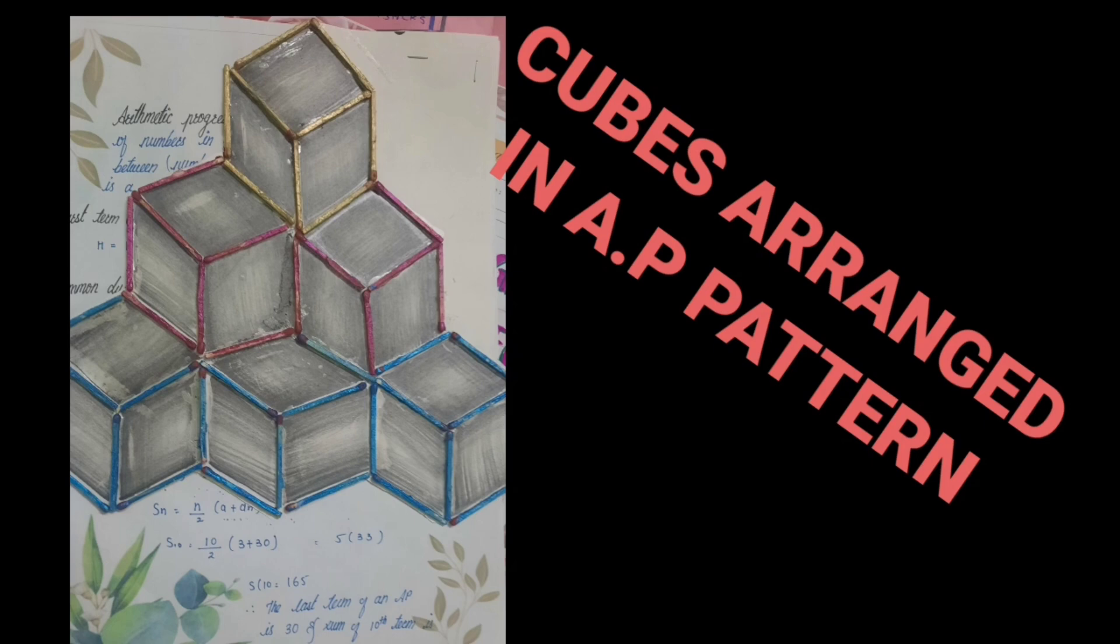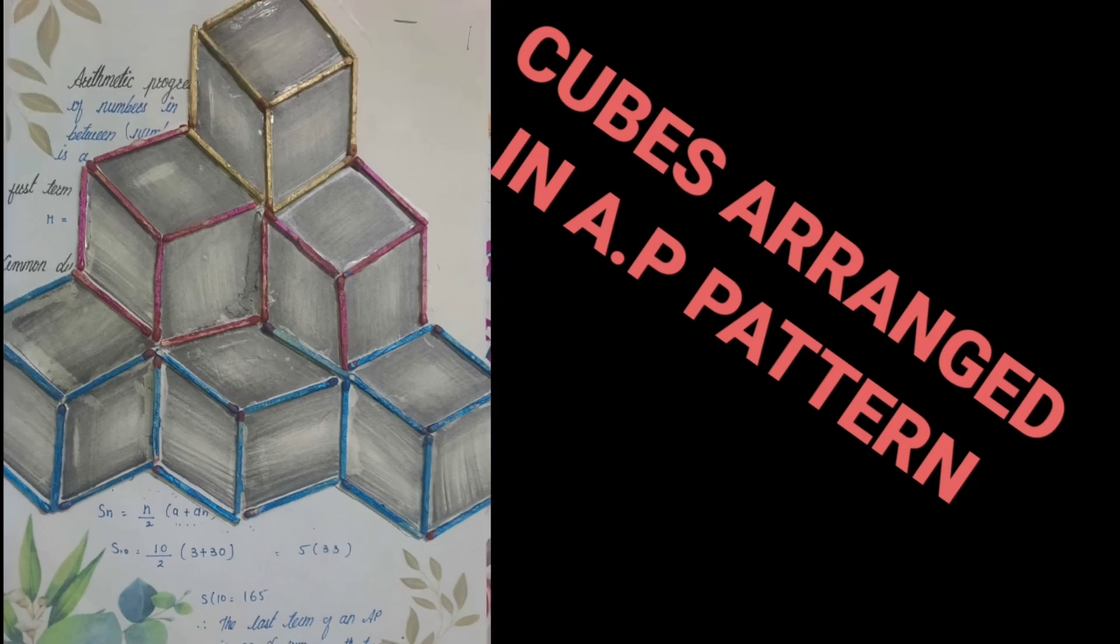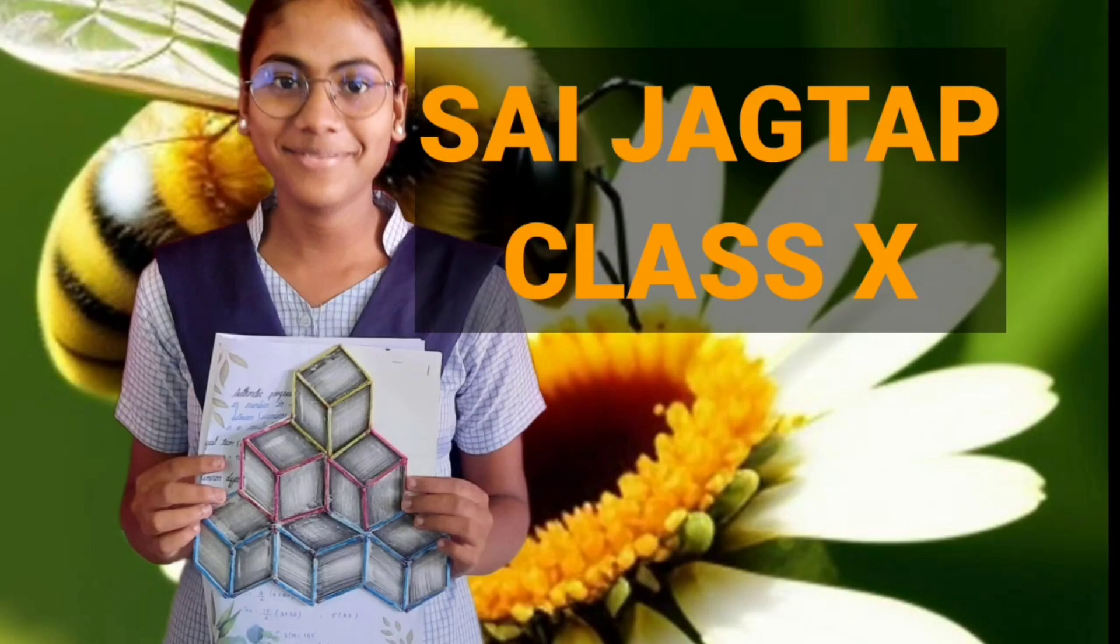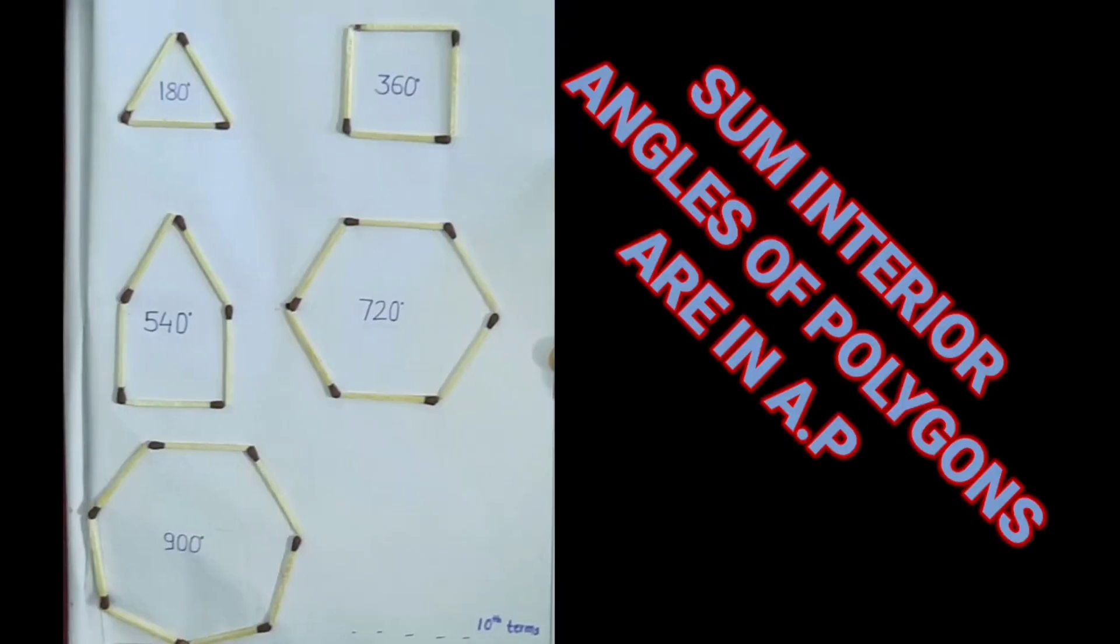We can see arithmetic progressions in three-dimensional geometry also. As you can see in the figure, the cubes are arranged one above the other, which is also the best example of an arithmetic pattern. Even the sum of interior angles of a triangle,